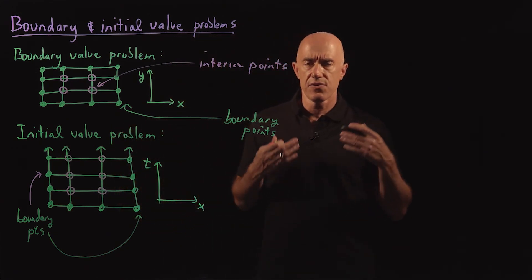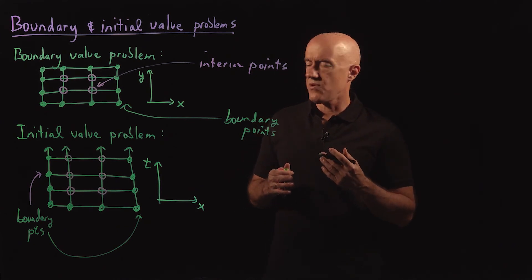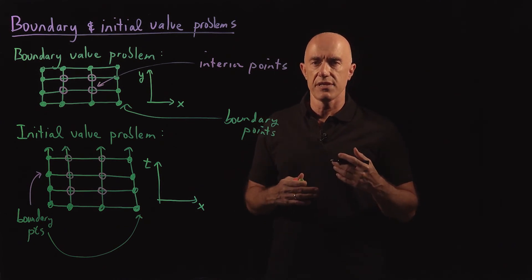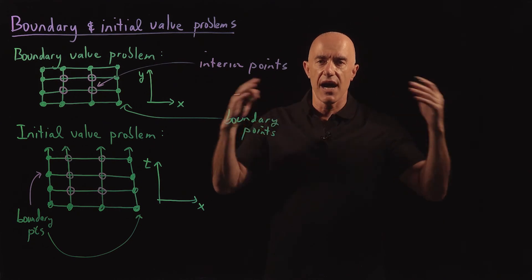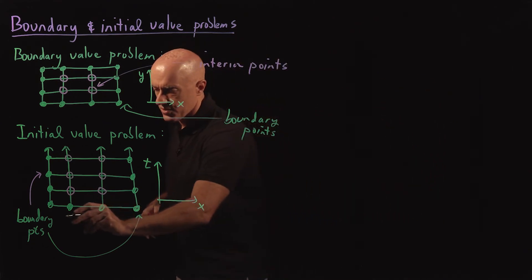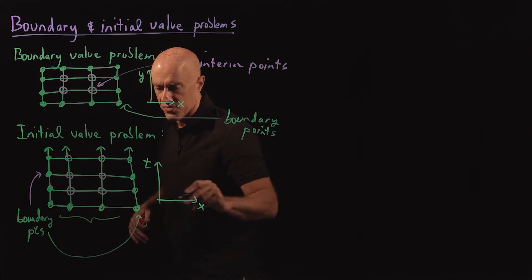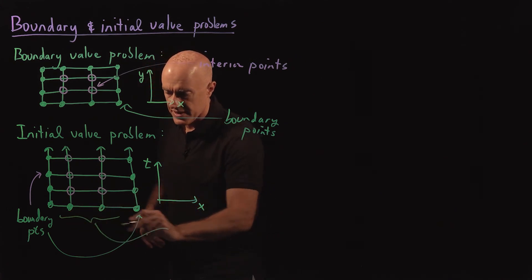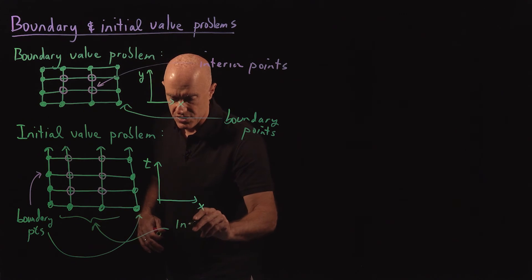In addition to the boundaries, you have what are called initial conditions. How is the dye concentration initially distributed? So down at this t equals zero position, these then are the initial conditions.